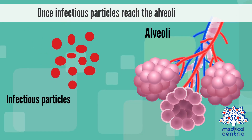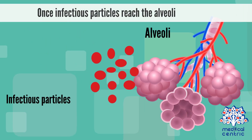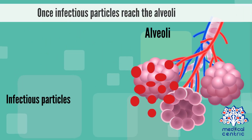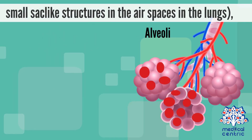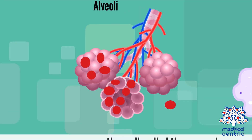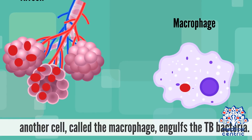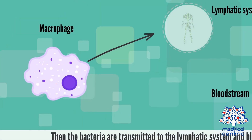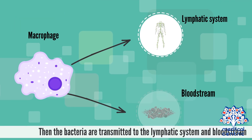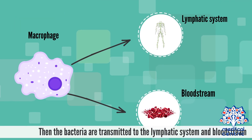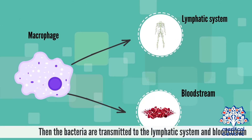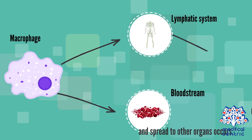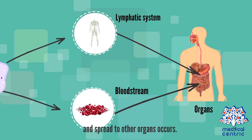Once infectious particles reach the alveoli — the small sac-like structures in the airspaces in the lungs — another cell called the macrophage engulfs the TB bacteria. The bacteria are then transmitted to the lymphatic system and bloodstream, and spread to other organs occurs.